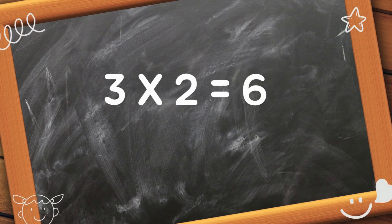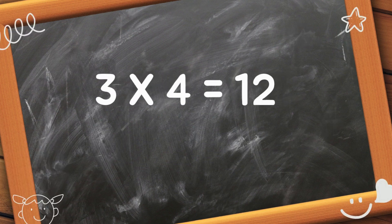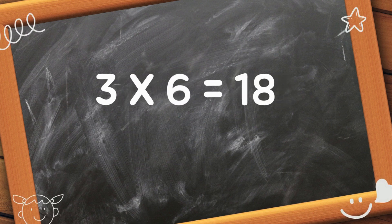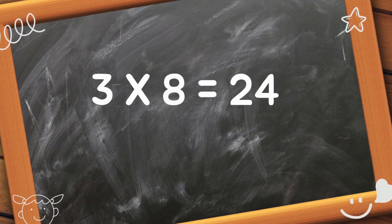3 1s are 3, 3 2s are 6, 3 3s are 9, 3 4s are 12, 3 5s are 15, 3 6s are 18, 3 7s are 21, 3 8s are 24, 3 9s are 27.